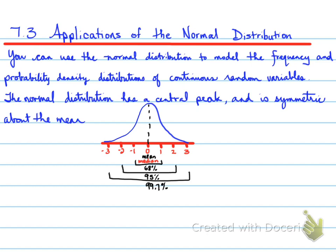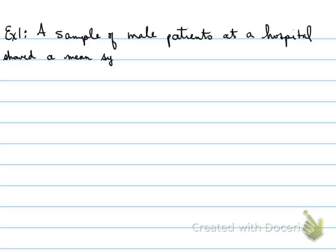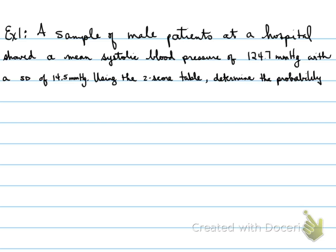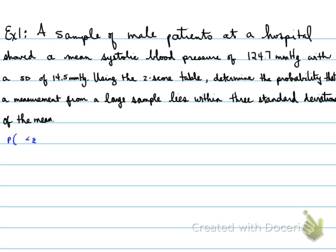A sample of male patients at a hospital showed a mean systolic blood pressure of 124.7 mmHg with a standard deviation of 14.5. Using the z-score table on pages 480 to 481, determine the probability that a measurement from a large sample lies within three standard deviations of the mean.